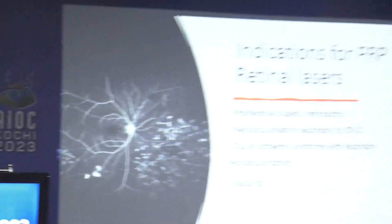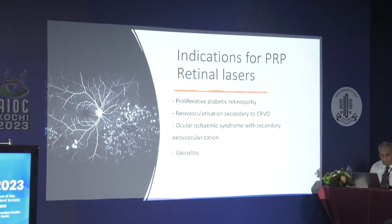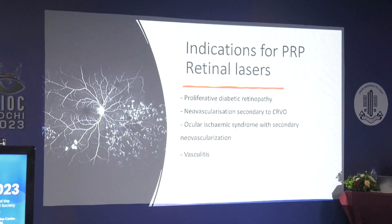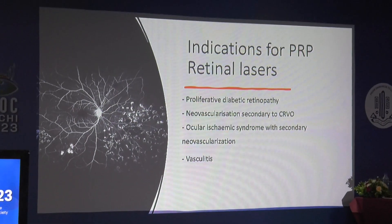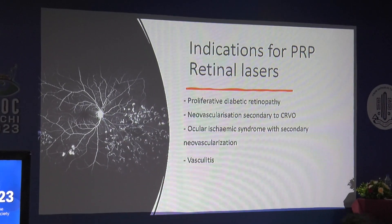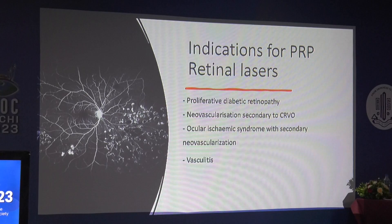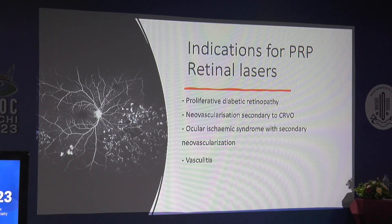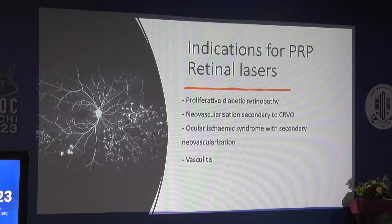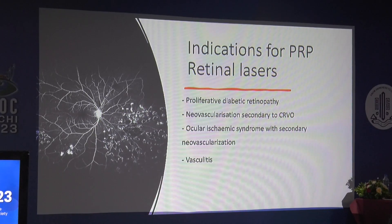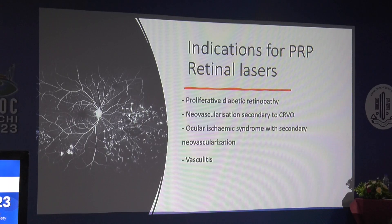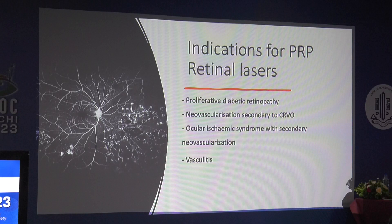These are the most common indications where PRP is required. First is proliferative diabetic retinopathy. Second is CRVO, especially ischemic CRVOs. Third is ocular ischemic syndrome with secondary neovascularization, which is seen in older group of patients. Or any kind of vasculitis involving either one sector or the whole retina.